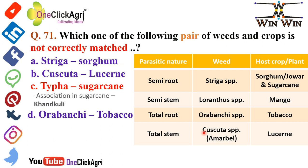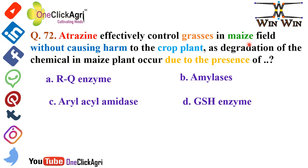Question 72: Atrazine effectively controls grasses in a maize field without harming the crop because degradation of the chemical in maize occurs due to the presence of GSH enzyme (glycoside hydrolase). If you encounter this question in an exam, it is better to leave it unless you know the right answer.